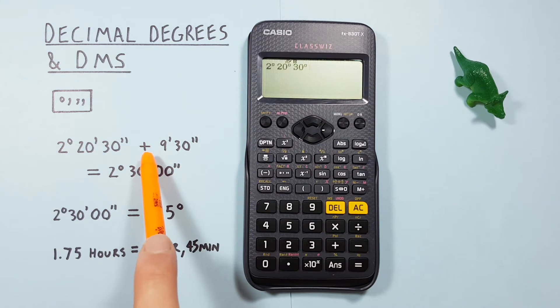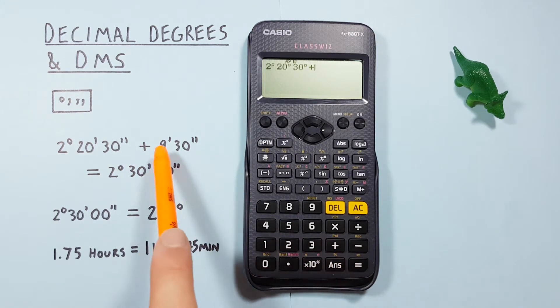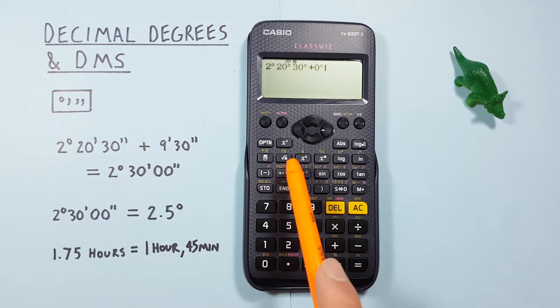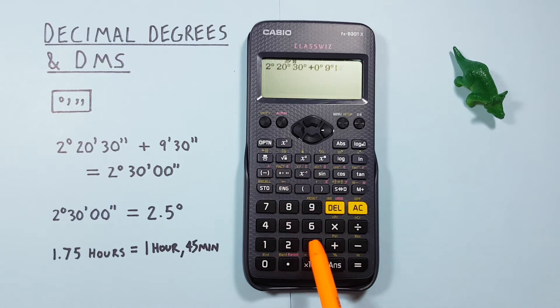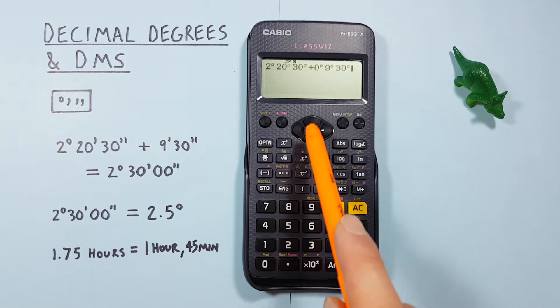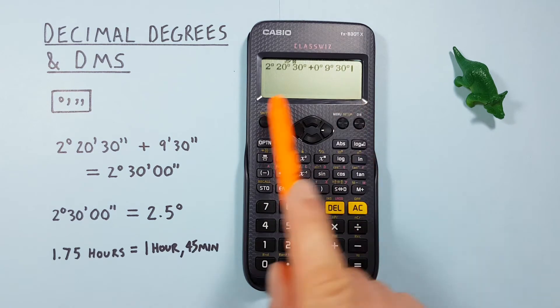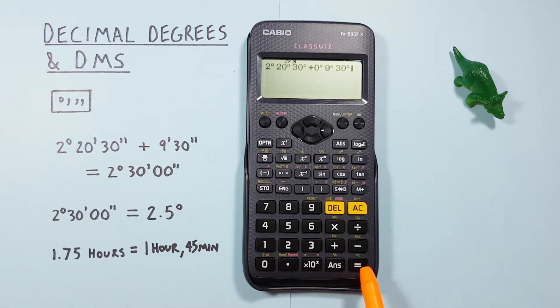So then we move on to the plus 9 minutes 30 seconds. So plus. And since we have 0 degrees here we go 0 degrees 9 minutes 30 seconds. There we go. It's all been entered. And we press equals.